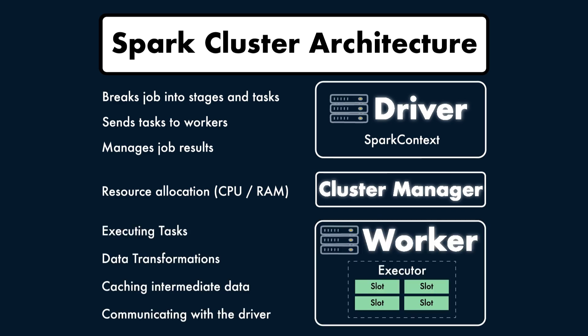Finally, we have the worker nodes — these are the machines that do the actual heavy lifting. A worker node consists of an executor. Each executor is responsible for executing tasks assigned by the Spark driver, performing data operations such as reading, transforming, and writing data. They're also responsible for caching intermediate data if required, as well as communicating with the driver and other executors when necessary.